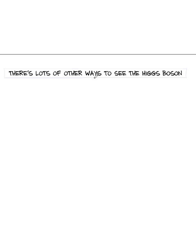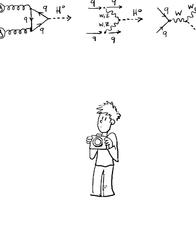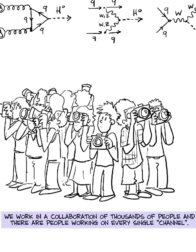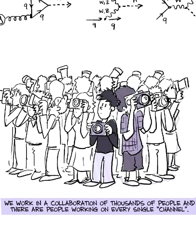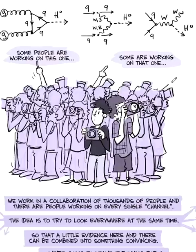But there's lots of other things that make the Higgs. There's ten other ways you can see the Higgs that people are working on that one also. We work in a collaboration of thousands of people, and there's people working on every single channel. Some people are working on this one, some people are working on this one. And the idea is to try to look everywhere simultaneously to see a little bit of evidence here and a little bit of evidence there and a little bit of evidence here can be combined into convincing evidence.